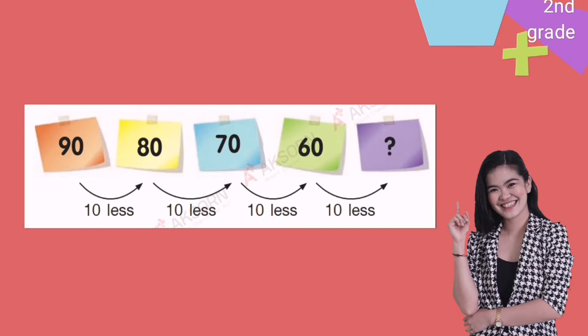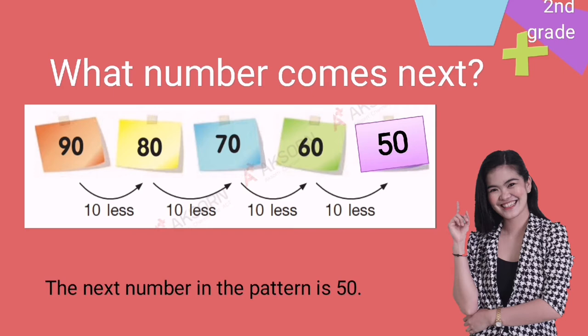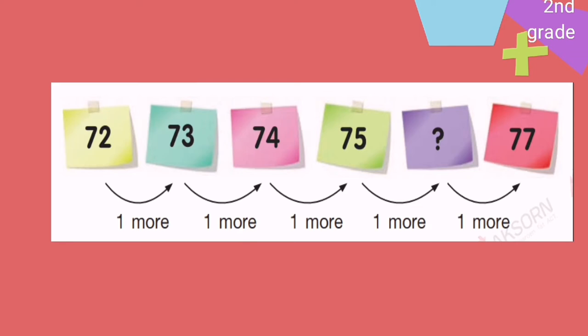Great job! So the next number in the pattern is 50. Let's have another example. We have 72, 73, 74, 75, and then blank — 76. What can you notice about these numbers? They only add one. So 75 plus one it will be 76.